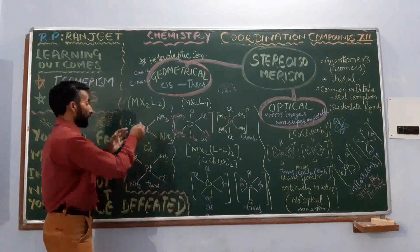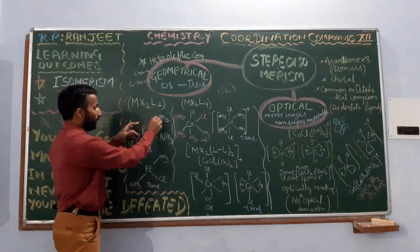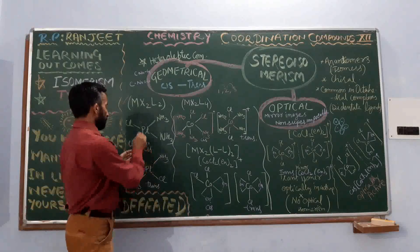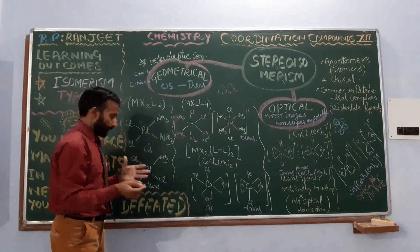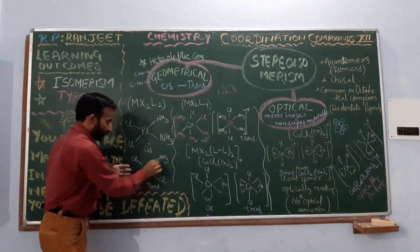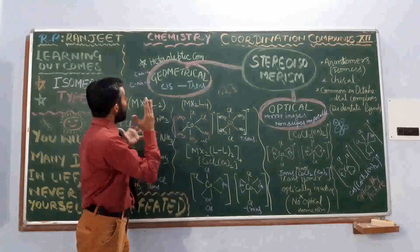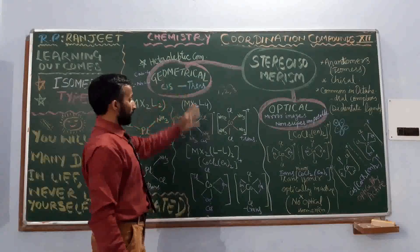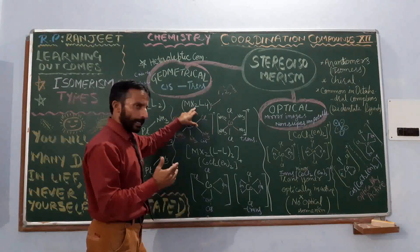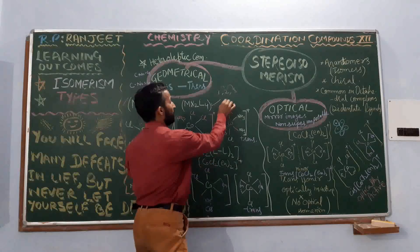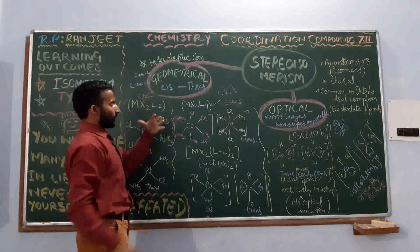Let's take the example of a platinum complex with chloride and amine as two types of ligands. This is the cis form because the two similar ligands are adjacent to each other. This is the trans form because they are diagonally opposite — amine is diagonally opposite to another amine, and chloride is diagonally opposite to another chloride. There can be another type where the metal has two ligands of one type and four ligands of another type, meaning the coordination number is 6. The previous example was for coordination number 4.